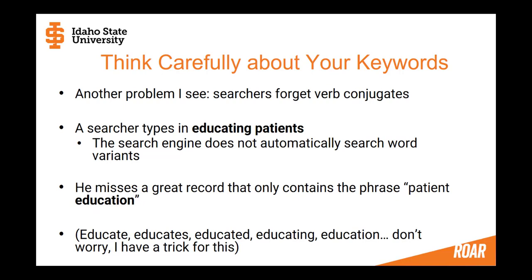Another problem is searchers forgetting about verb conjugates. A searcher might type educating patients, but the search engine does not automatically check for word variants, so they'll miss a record that contains the phrase patient education instead. When you think about English language verbs, there are so many variations — educated, educates, and so on. Don't worry though — when we get to constructing search strings, I'll show you a trick so it's quick and easy to handle without too much concern.